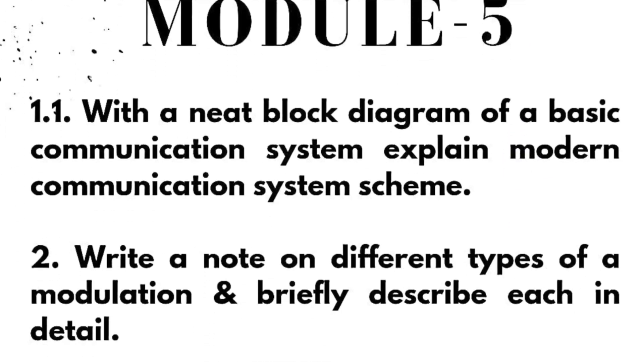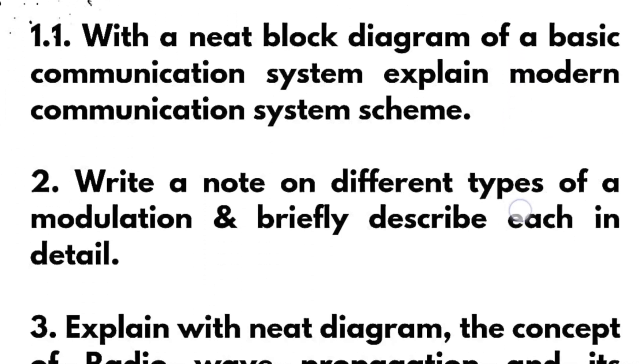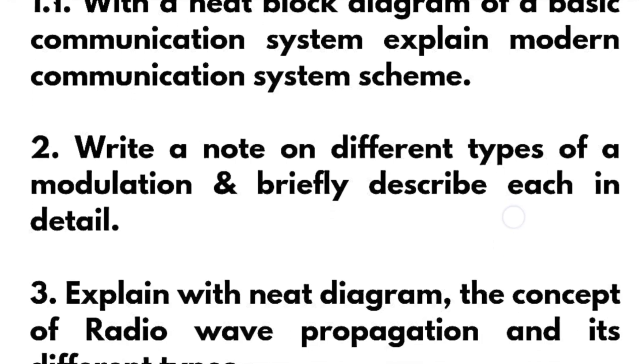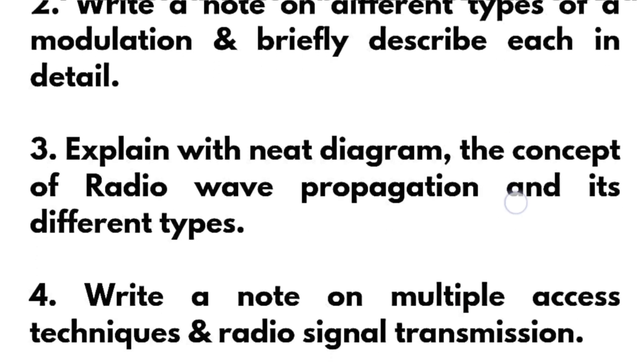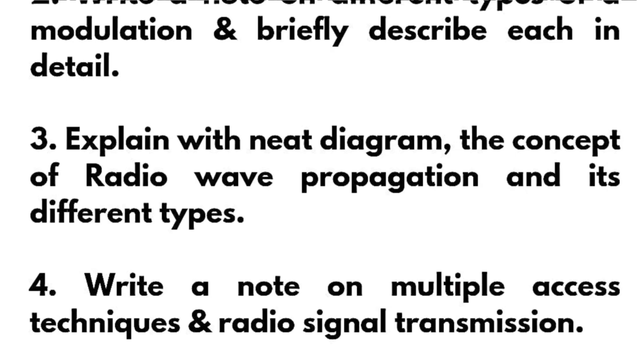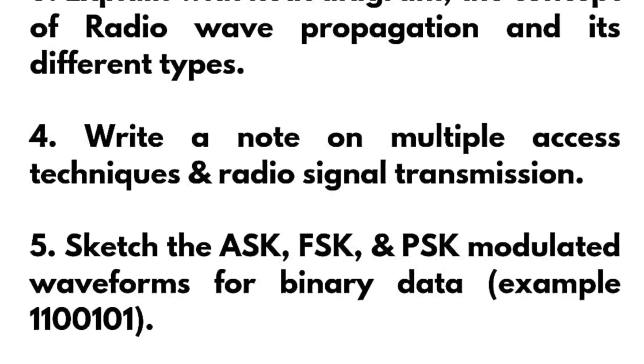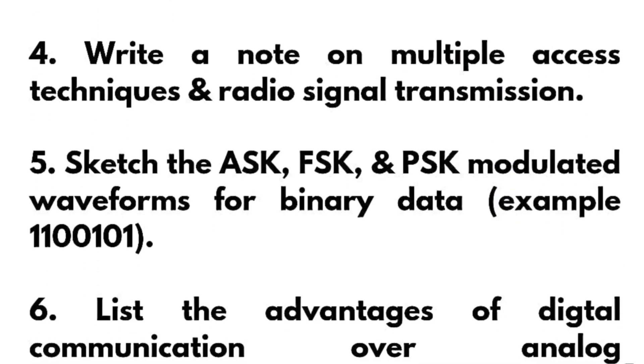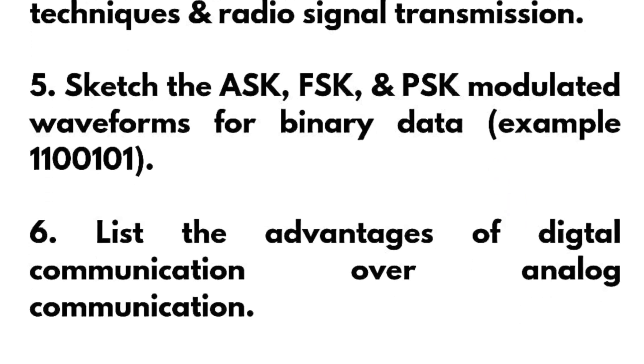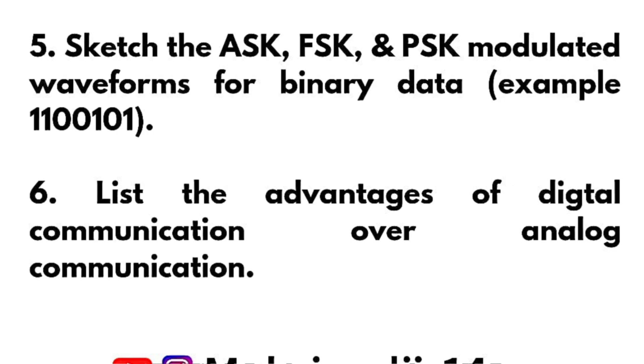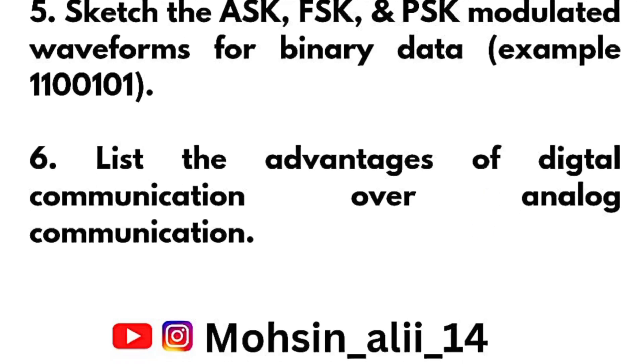With a neat block diagram of a basic communication system, explain modern communication system scheme. Write a note on different types of modulation and briefly describe each in detail. Explain with neat diagram the concept of radio wave propagation and its different types. Write a note on multiple access techniques and radio signal transmission. Sketch the ASK, FSK, and PSK modulated waveforms for binary data, for example 1100101. List the advantages of digital communication over analog communication.